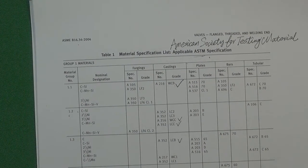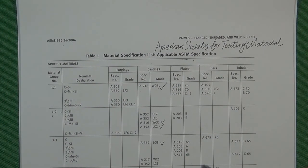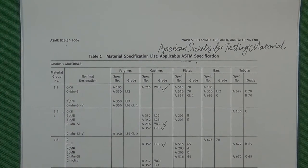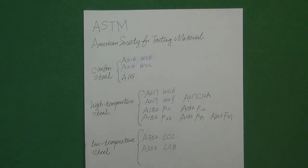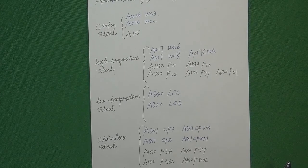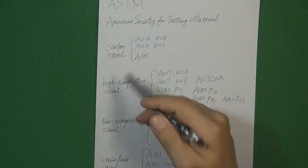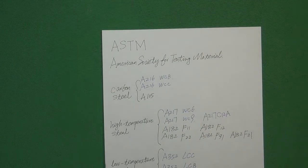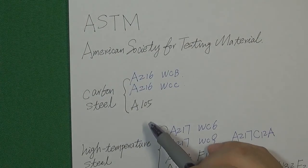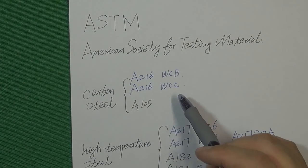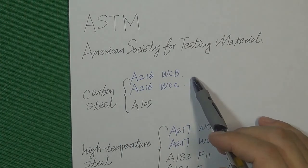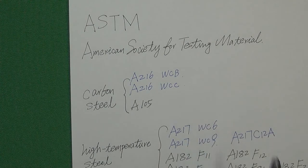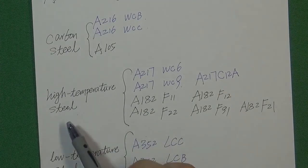We don't need to talk about all the materials in this table — it would be very complicated. So I've written down the 20 most important steels in the valve industry and divided them into 4 groups. The first group is the carbon steel group, which we already talked about, divided into casting and forging standards. Today let's talk about the high temperature steel.